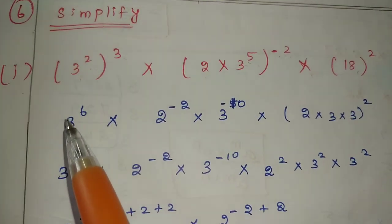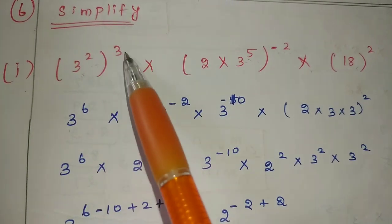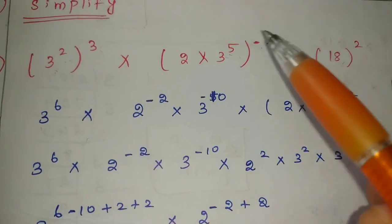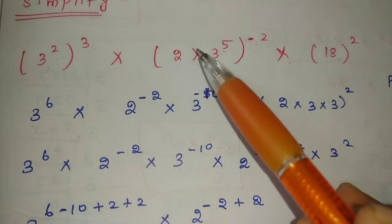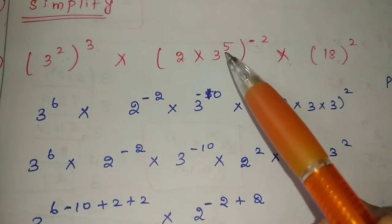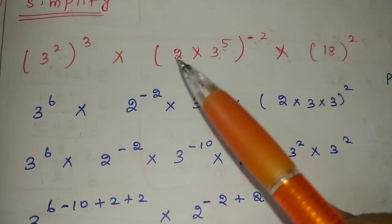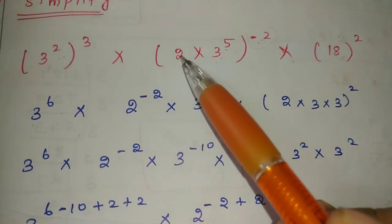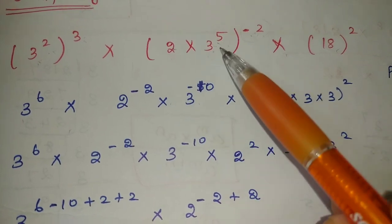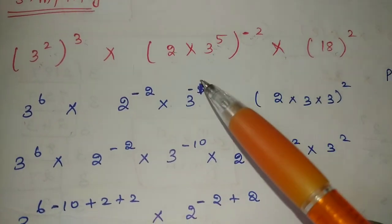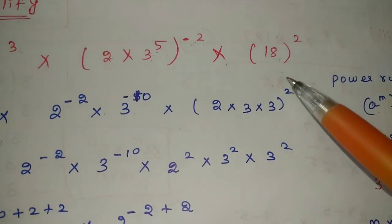So now we will talk about 3 and 2: 3 times 2 is 6. Here we will talk about minus 2, and here we will talk about 2. So 2 power minus 2, into 3 power 5 to the 10, minus 10, into 18.